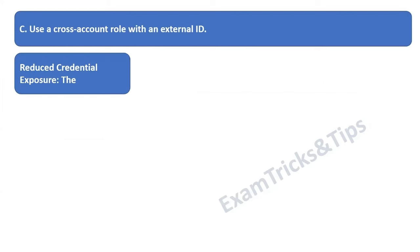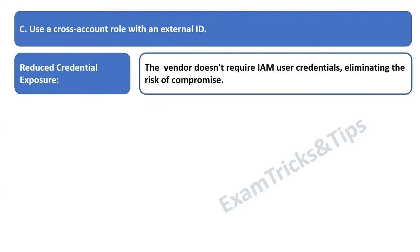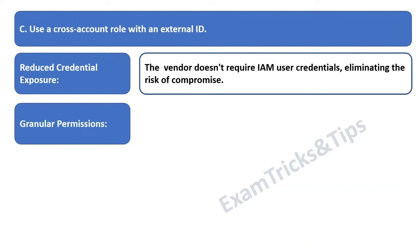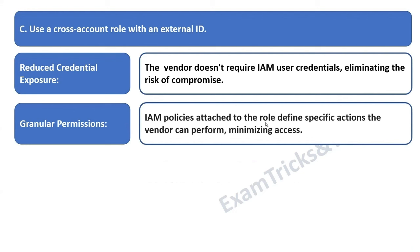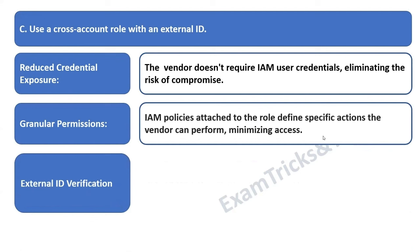Let's do a deep dive on how option C satisfies all the requirements. First: reduced credential exposure — the vendor doesn't require IAM user credentials, eliminating the risk of compromised access. Second: granular permissions — IAM policies attached to the role define specific actions the vendor can perform, minimizing access. You control what the user can do by using the policies attached to the role. Third: external ID verification — a unique identifier from the vendor system adds another layer of security by ensuring the role can only be assumed by the authorized vendor.